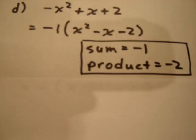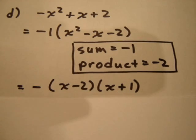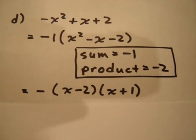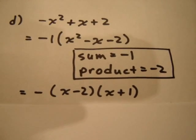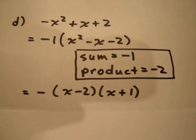So again, making sure to carry along our negative 1 which is in front of the bracket, we get negative 1, which can be expressed as a negative sign, times (x - 2)(x + 1). Thank you.